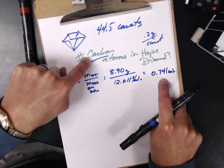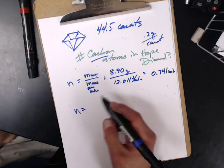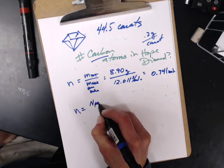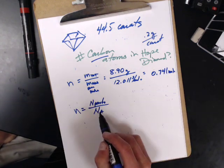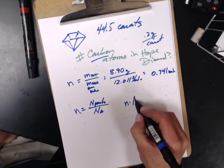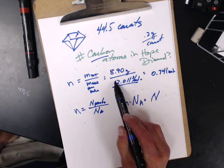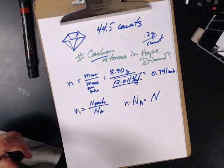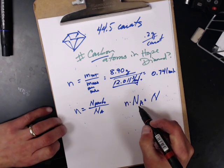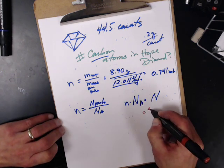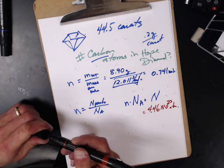But I don't want that. I want to know how many carbon atoms there are. Well, the number of moles is just the number of particles divided by Avogadro's number. So, I now know the number of moles. I can multiply that times Avogadro's number and that's going to give me the number of particles. What particles? These particles. My carbon atoms. So, I multiply that around. I take 0.741 times Avogadro's number and I end up with 4.46 times 10 to the 23rd atoms.